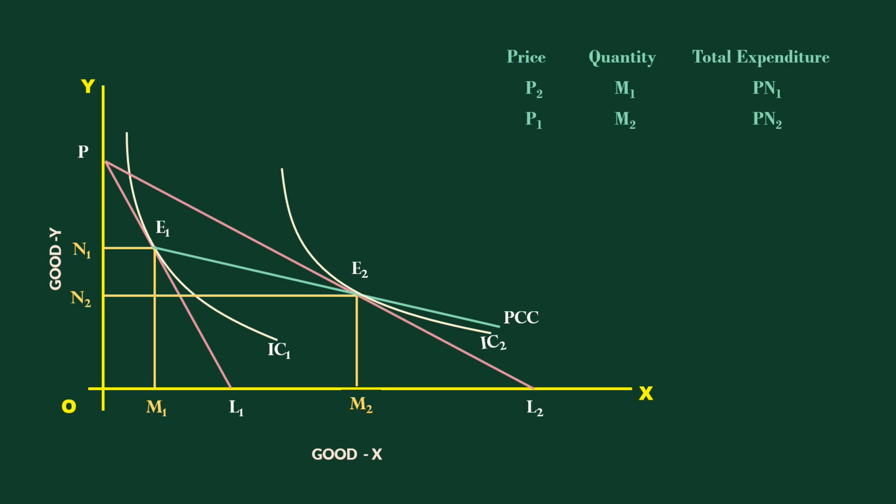It is time to find the elasticity of demand. For this, we have to do two things. One, examine whether the price and quantity move in the opposite directions. Yes, they are. Price falls and quantity goes up. Both are moving in opposite directions. They satisfy the law of demand.